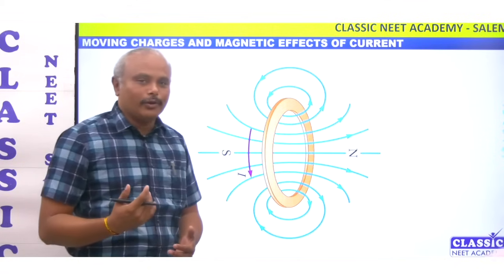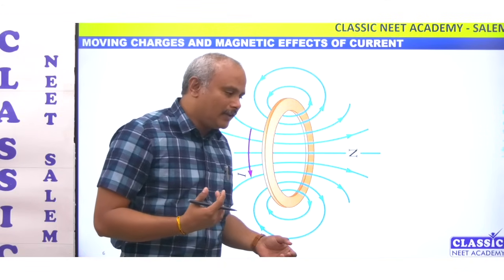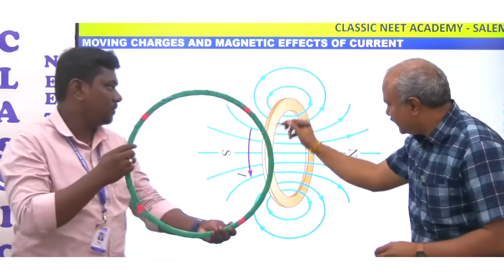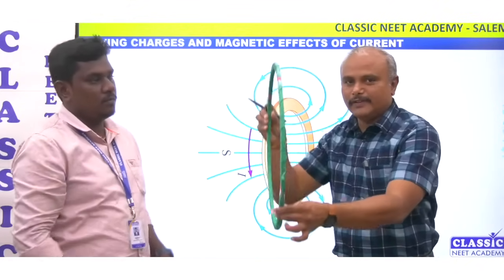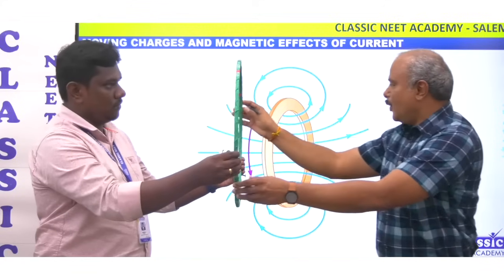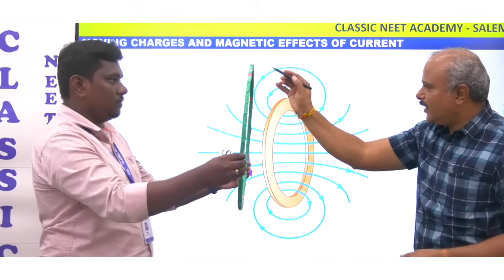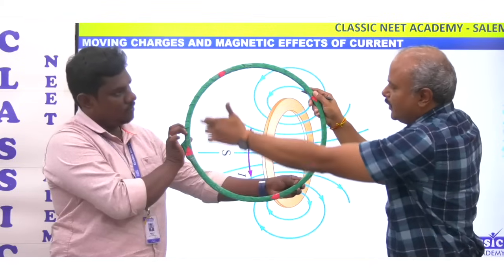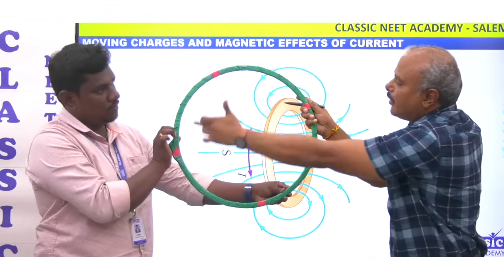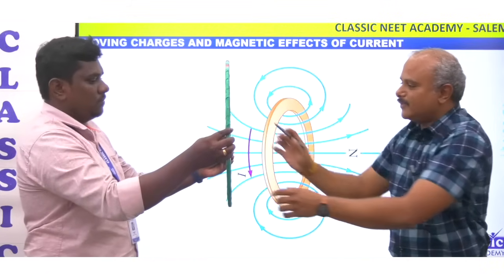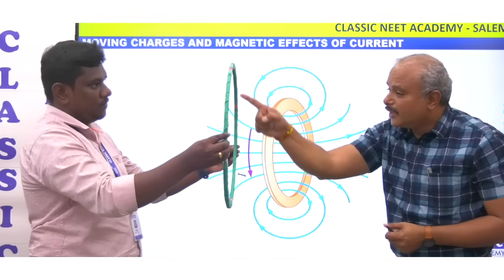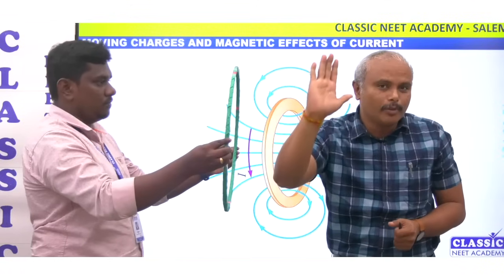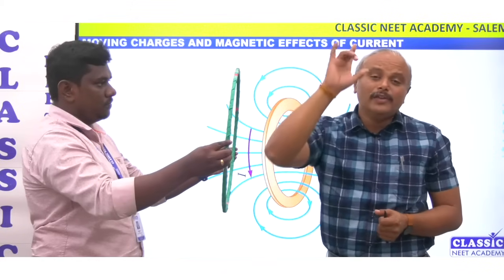If you have a coil like this — this is a coil — and if you see that current will flow in the anti-clockwise direction, and if you have a magnetic field, it will flow in a particular direction.